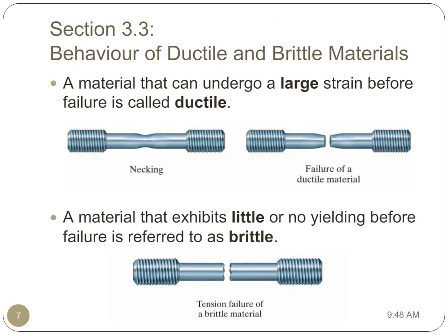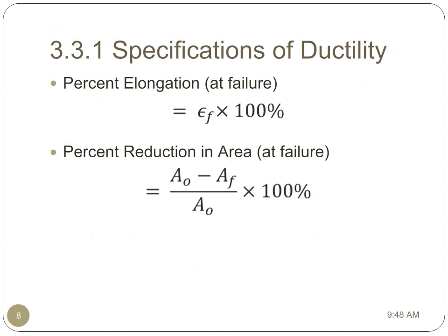Based on their properties at failure, materials are often described as being brittle or ductile. A material that can undergo a large strain before failure, and specifically a yielding strain or a plastic strain, is called ductile. Materials that exhibit little or no yielding before failure are referred to as brittle. The ductility of a material is often described by the percent elongation, or the strain at failure times 100%, or the percent reduction of area, which is equal to the original cross-sectional area minus the area at failure divided by the original cross-sectional area times 100%.